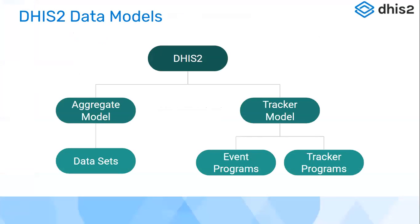We're all aware of the basic data models available in DHIS2. To refresh people — and for those relatively new to DHIS2, the District Health Information System — DHIS2 allows two broad data types to be captured. One is the aggregate model, where you enter pre-summarized information as numbers on a fixed frequency, which can range from daily, weekly, monthly, quarterly, six-monthly, to annual, depending on your data collection needs.